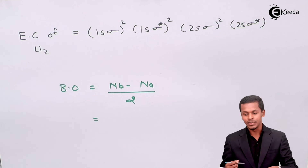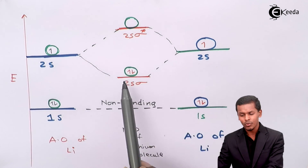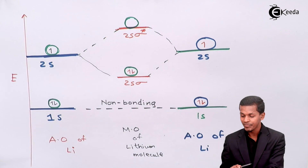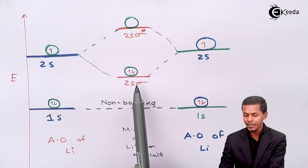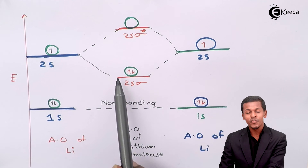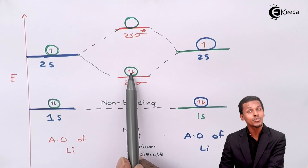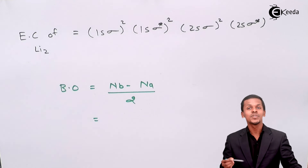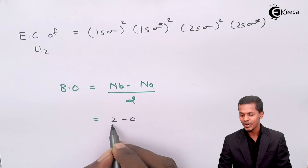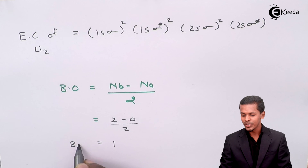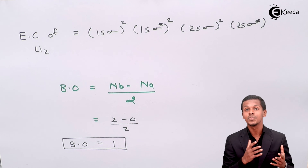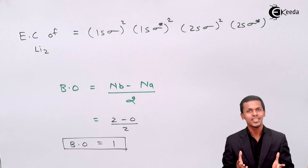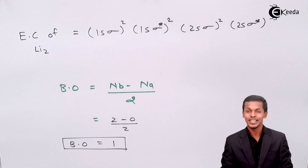Looking at this diagram, we consider only the 2s molecular orbitals: σ2s and σ*2s. The σ2s orbital at lower energy is the bonding orbital, while the one above is the anti-bonding orbital. The total number of electrons in the bonding orbital is 2, and in the anti-bonding orbital it is 0. Substituting into the formula: Bond Order = (2 − 0) / 2 = 1. This means lithium forms one bond with lithium, which is what the molecular orbital diagram confirms.